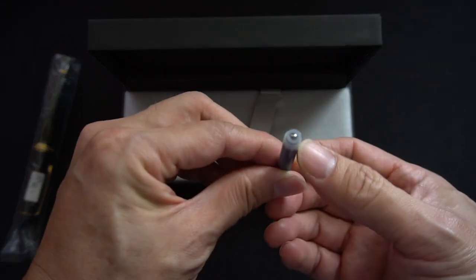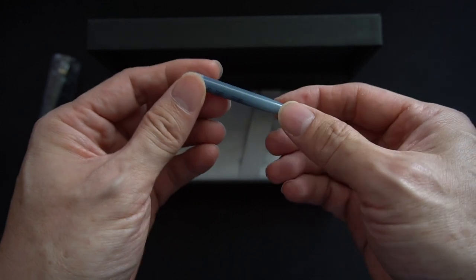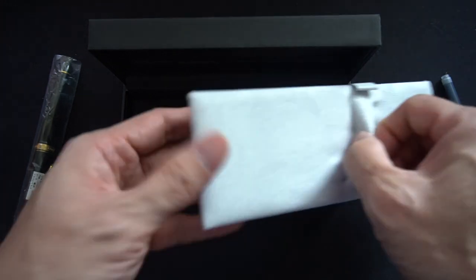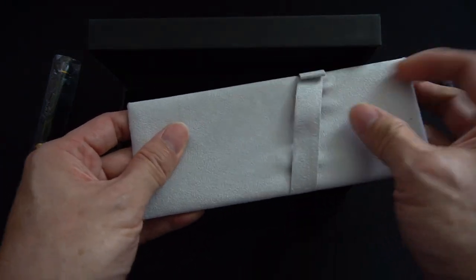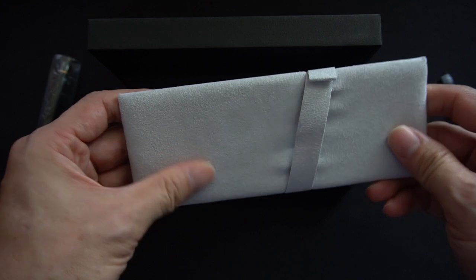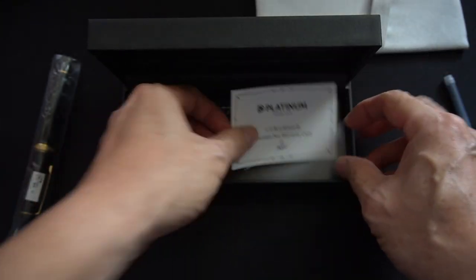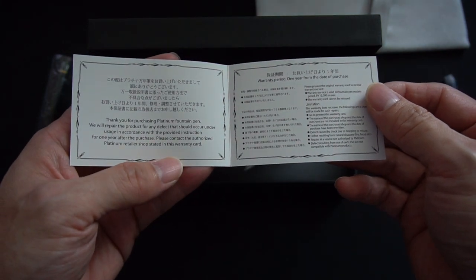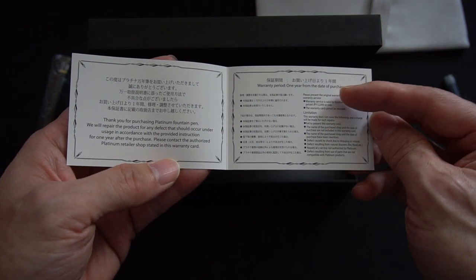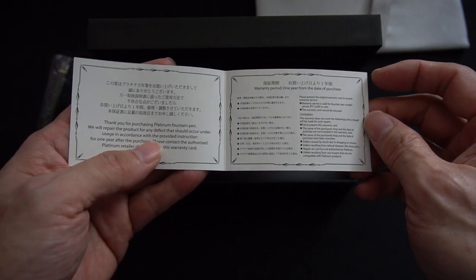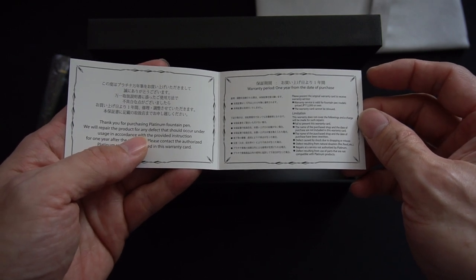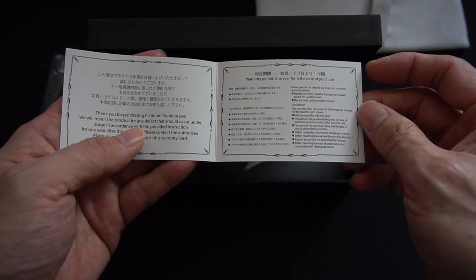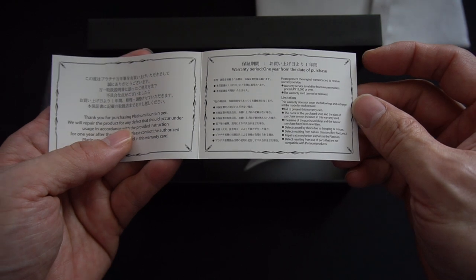You can see the ball bearing here, very typical Platinum cartridge. See what else it comes with. This is a lined material of some sort, and the warranty card which is always nice, feels like you're buying something expensive. It says warranty period one year from date of purchase, valid for fountain pen models 12,000 yen and above.